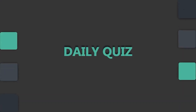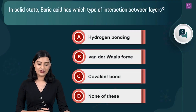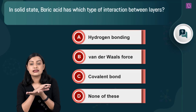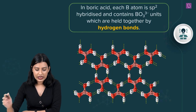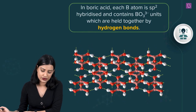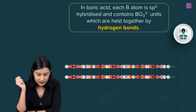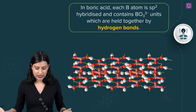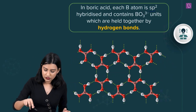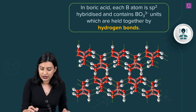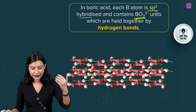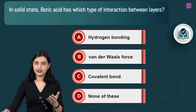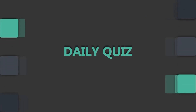In solid state, boric acid has which type of interaction between its layers? Boric acid exists in layers in the solid state. These layers are held together by hydrogen bonds — you can see the yellow dotted lines representing hydrogen bonds. Each boron atom is sp2 hybridized and contains BO₃³⁻ units which are held together by hydrogen bonds. So option A, hydrogen bonding, is the right answer.